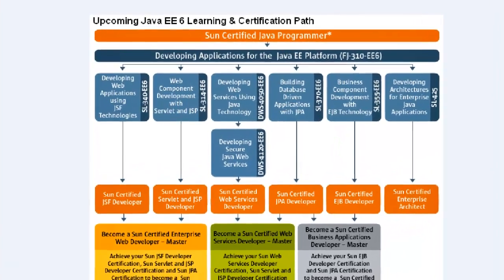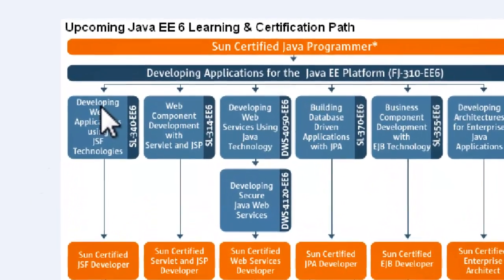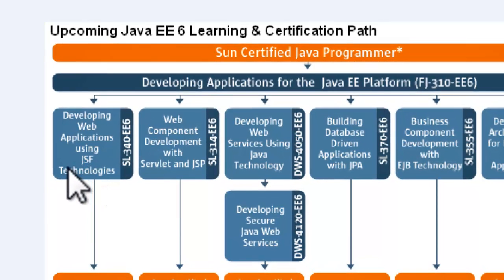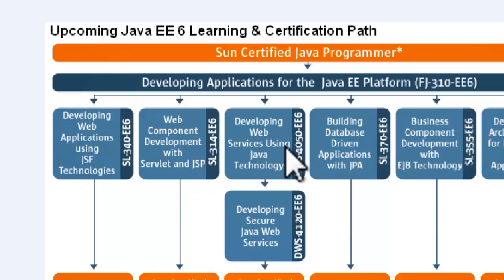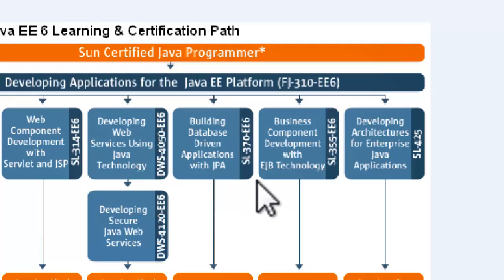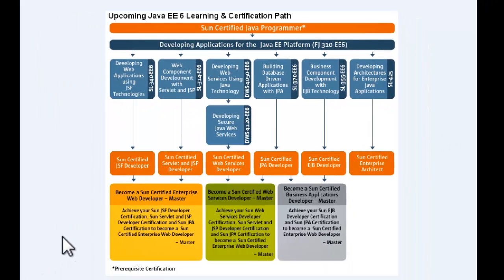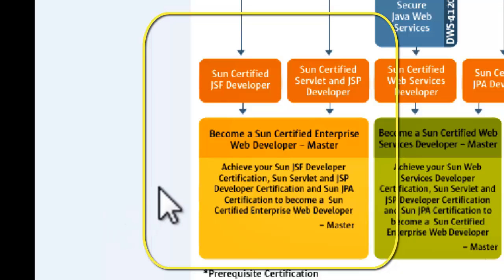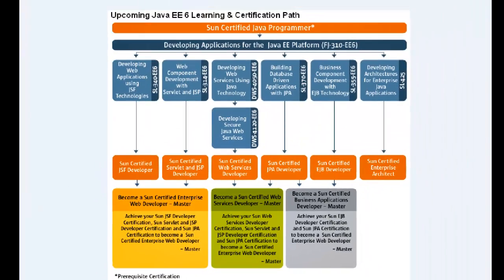To quickly summarize: up here it describes developing web applications using JSF, web components with Servlets and JSP, web services using Java technology, building database applications with JPA, components with Java Beans, and one path leads to an Architect. So in conclusion, the three levels are Programmer, Developer, Master. The Master is the top of the career path. If you understand the combinations — for example JSF and Developer — when you come to do your database search you'll have method in what you do.